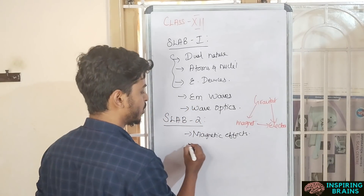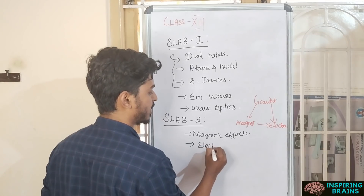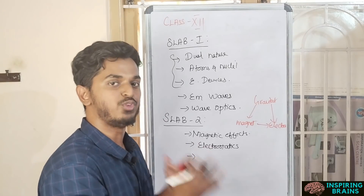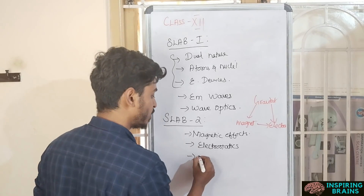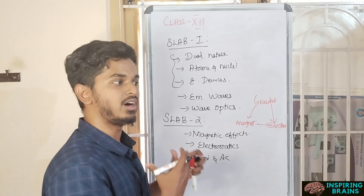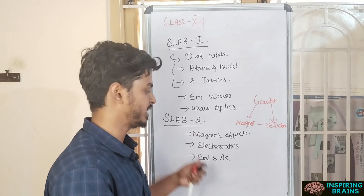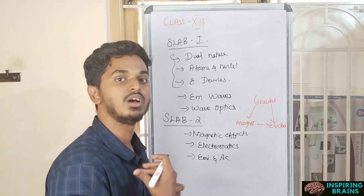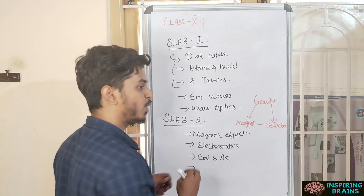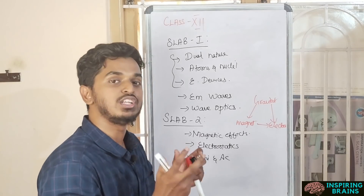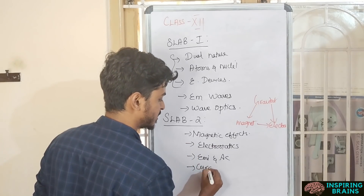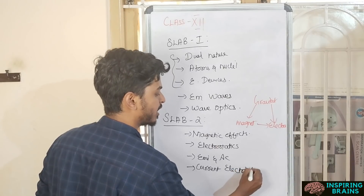Since it's a triad, your Gravitation study feeds into Magnetic Effects, which then feeds into Electrostatics. Once you're done with Electrostatics and know the formulas, go with EMI and AC. You'll have conceptual knowledge and can apply it to solve problems.